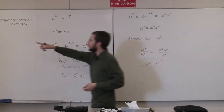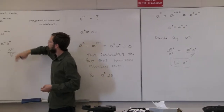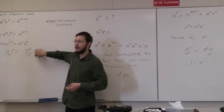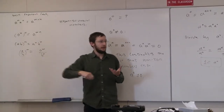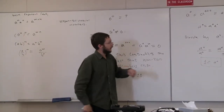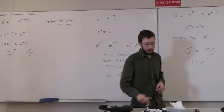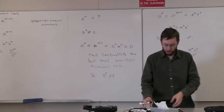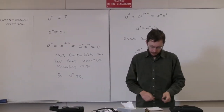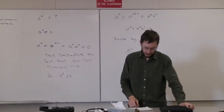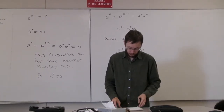So there we go — we took natural number exponents and, just using these exponent laws, were able to derive what a to the zero is, which is no longer a natural number. The same idea applies to negative exponents.